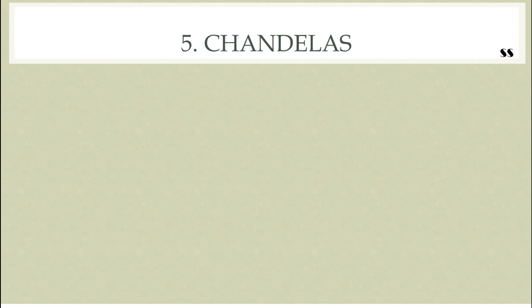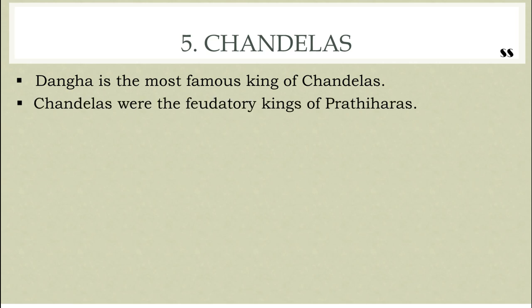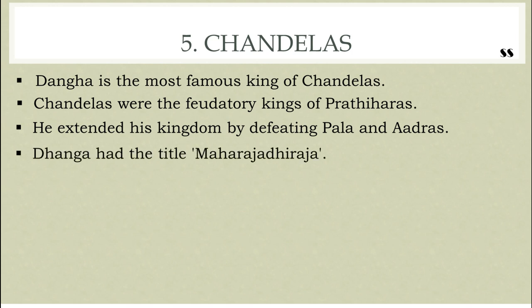The next dynasty is the Chandelas. Dhanga is the most famous king of the Chandelas, who prospered in Bundelkhand. In the beginning, the Chandelas were feudatory kings of the Pratiharas. After the decline of the Paramars, Dhanga declared himself independent. He took hold of the eastern part of the Paramara kingdom and extended his kingdom by defeating the Palas. Dhanga, who held the title Maharajadhiraja — meaning king of kings — extended military assistance to the Hindu Shahi king Jayapala to fight back the attacking Turks. Finally, due to infighting and lack of unity among the Rajputs, the Khilji sultans conquered this kingdom.